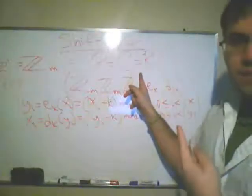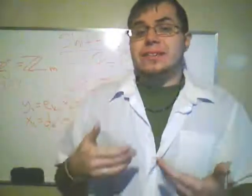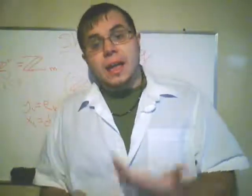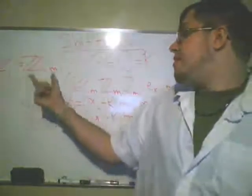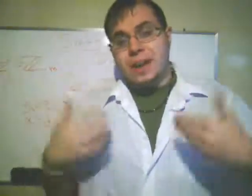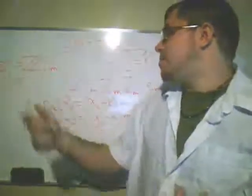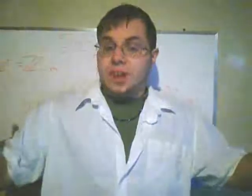This italicized blackboard K is this finite set of possible keys. This is the key space. And in this case it's the same as script P and script C. So the finite set, the ciphertext, plaintext, and the keys are all the exact same Z_m.